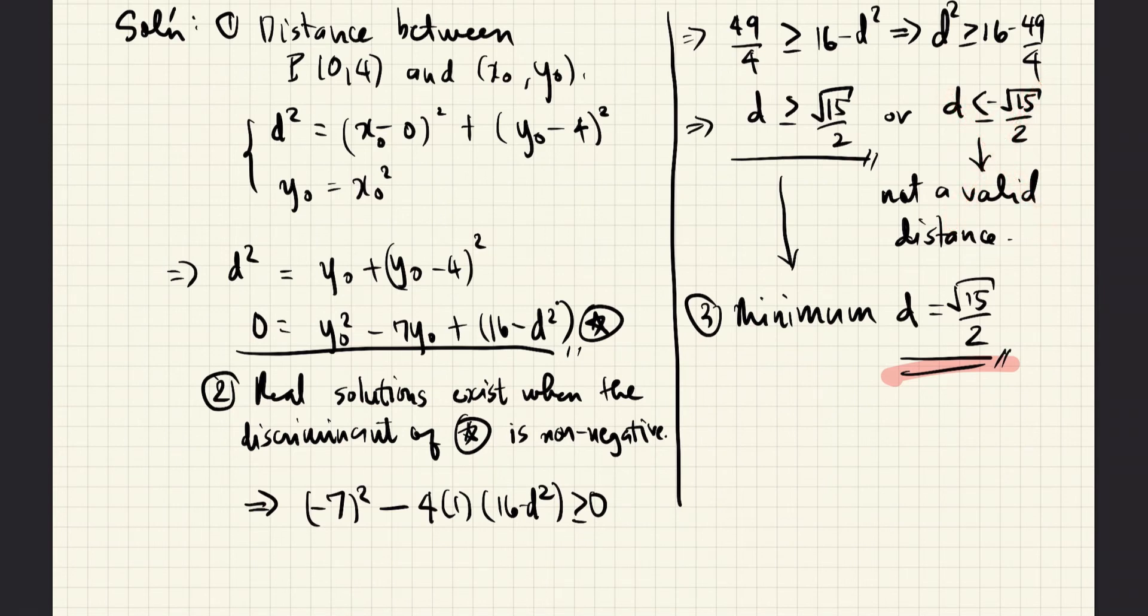Our solution, therefore, is that the distance must be greater than or equal to the square root of 15 over 2. This means that for this equation to have at least one real solution, the distance must satisfy this inequality. And if we look at that inequality, we notice that the smallest possible value of d must be this value here. And so, this is the value that we are looking for as the answer.